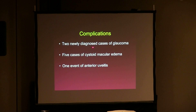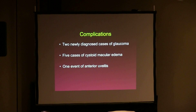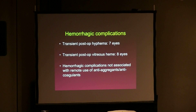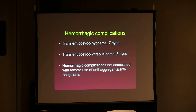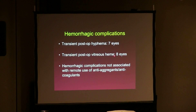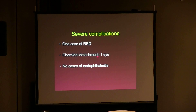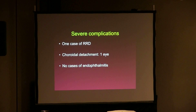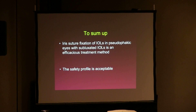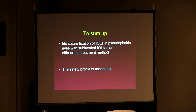Complications included two newly diagnosed cases of glaucoma — many of our patients had pseudoexfoliation to start with and were likely predisposed. There were five cases of cystoid macular edema and one event of anterior uveitis. Hemorrhagic complications included hyphema in seven eyes — transient, resolved with conservative management — and vitreous hemorrhage in eight eyes, which also resolved spontaneously without vitrectomy. There was one case of rhegmatogenous retinal detachment, one case of choroidal detachment, and no cases of endophthalmitis.